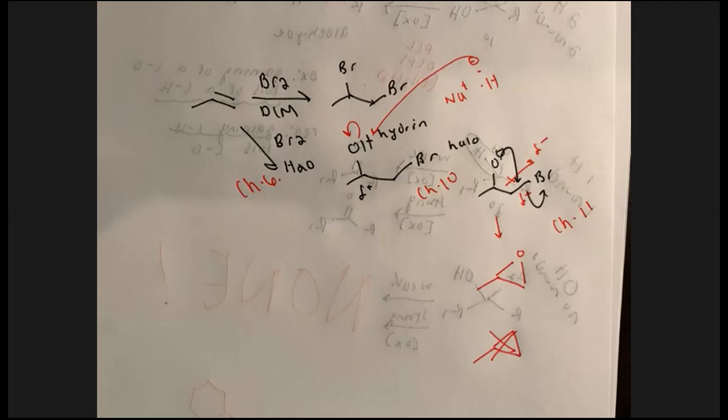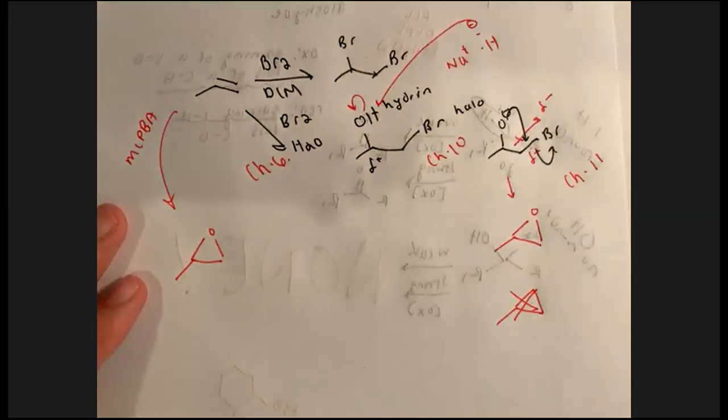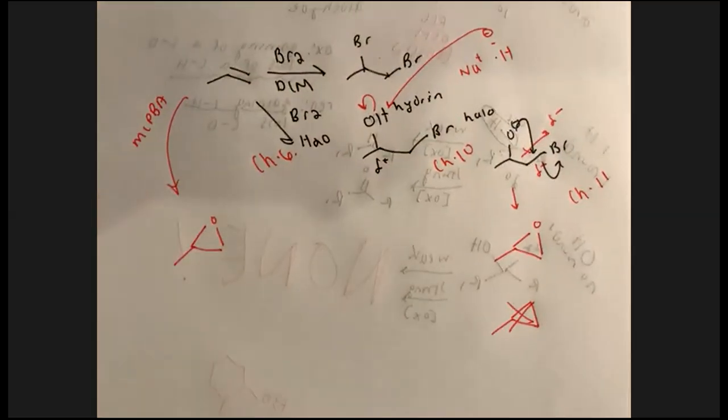Don't confuse epoxides with cyclopropanes — make sure you put an oxygen in that three-membered ring. That's what an epoxide is. The MCPBA route goes directly to the epoxide without needing to know the mechanism.